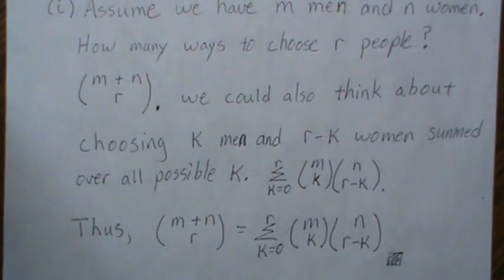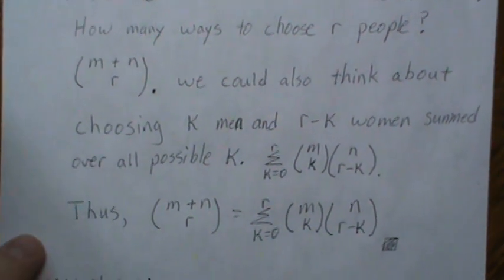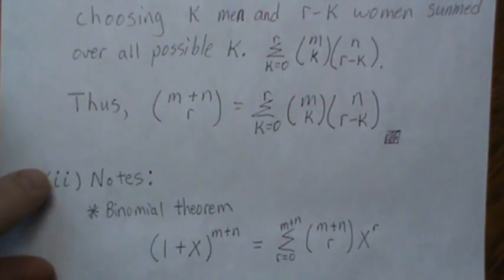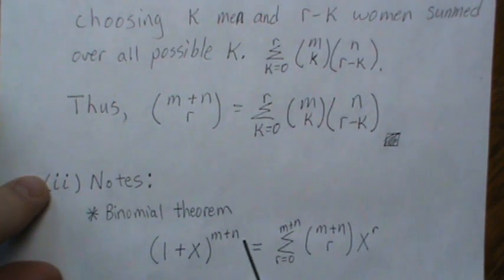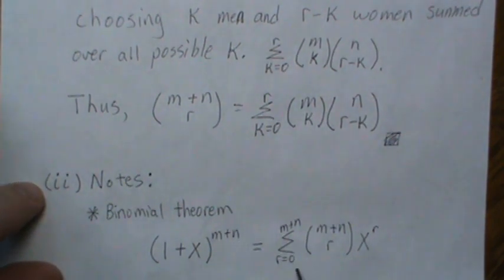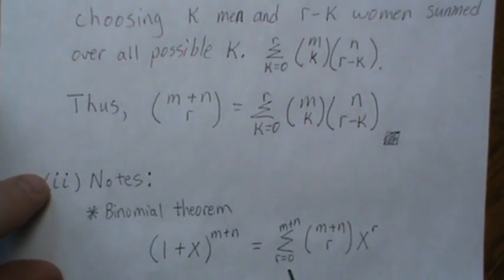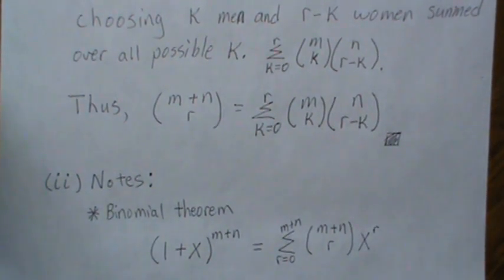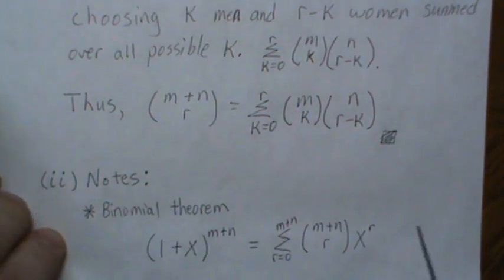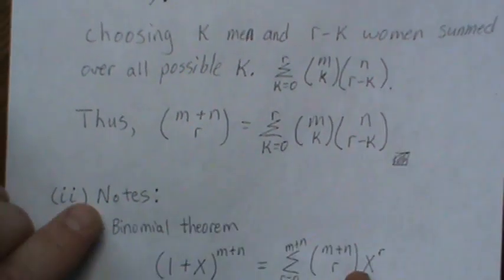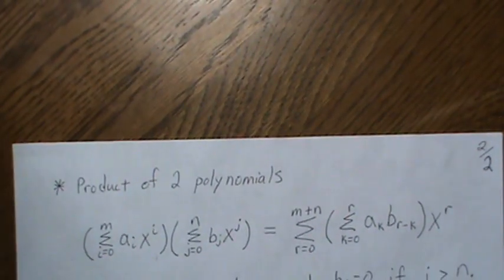For our second proof, we need a couple notes. First, the binomial theorem says if we have this quantity raised to a power, then that equals this sum. The polynomial equals this polynomial with the binomial coefficients going from zero to m plus n. I have a video on the binomial theorem if you want to search that under statistics.